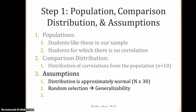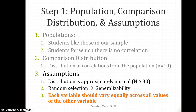The second assumption is random selection, which relates to generalizability. If we randomly select from the population, we can make inferences about it; otherwise, we generalize with caution and use replication to increase confidence. The third assumption, specific to correlation, is that each variable should vary equally across all values of the other variable — meaning you can't have one part of your distribution with almost no variability while another end varies greatly. We need homogeneous variability across all values.